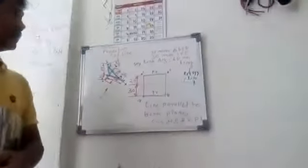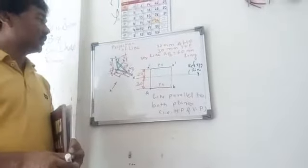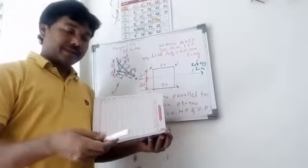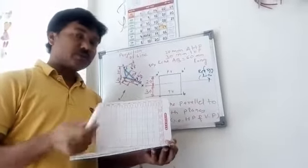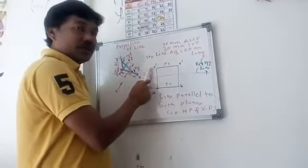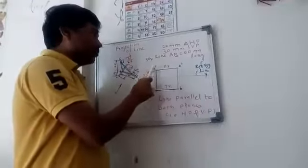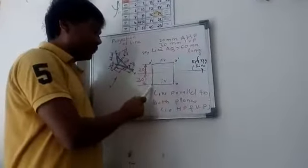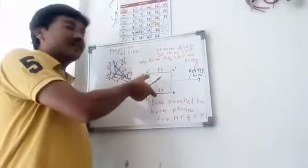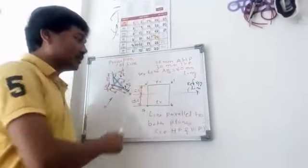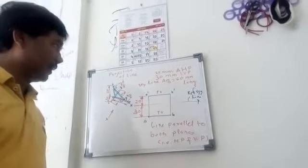We will try to understand the position of the line with respect to HP and VP differently. Before the next example, let me clarify the notation: we will use small letters with a dash to represent the line in the front view, and small letters without a dash for the top view. This notation makes the difference between front view and top view clear, and we will always use this convention in Projection of Line.